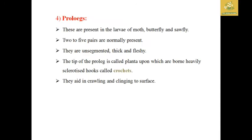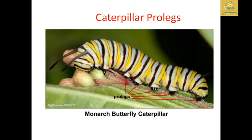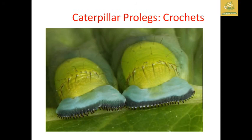Prolegs are present in larvae of moths and butterflies. Two to five prolegs are normally present; they are unsegmented, thick, and fleshy. The tip of the prolegs is called the planta, which bears heavily sclerotized hooks called crotchets. Prolegs aid in crawling and clinging to the surface of plants. True legs are found in the thoracic region, while prolegs are found on the abdomen — as seen in monarch butterfly caterpillars.